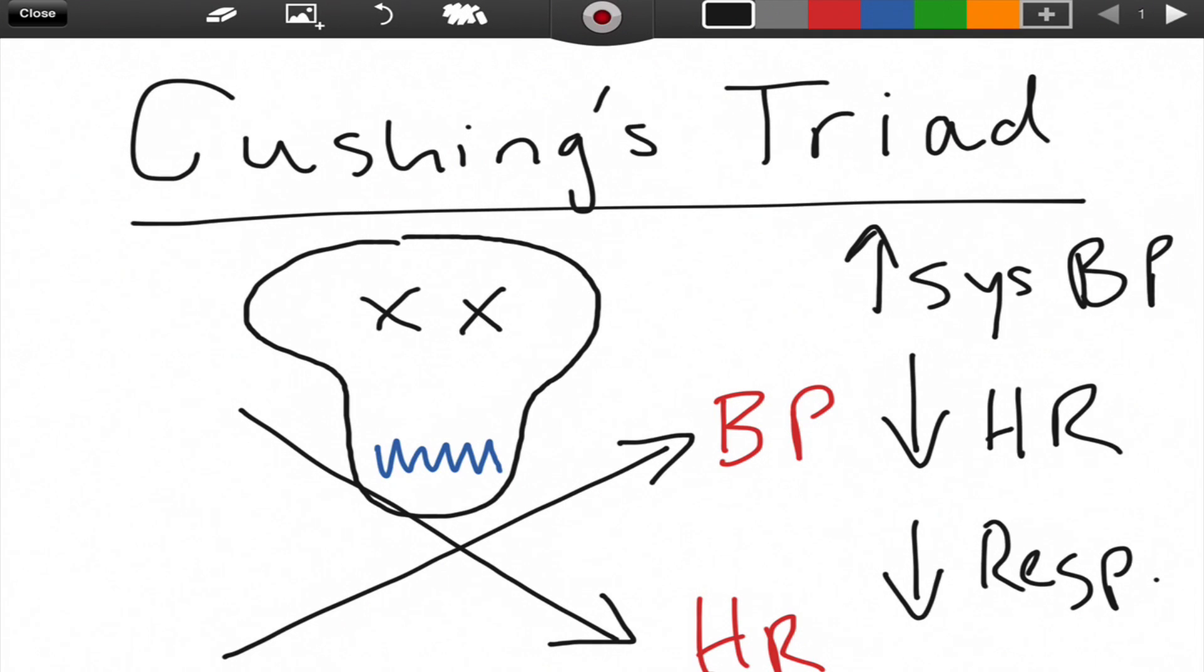So we look at Cushing's Triad because it helps us in the field see that there's a potential for increased intracranial pressure.